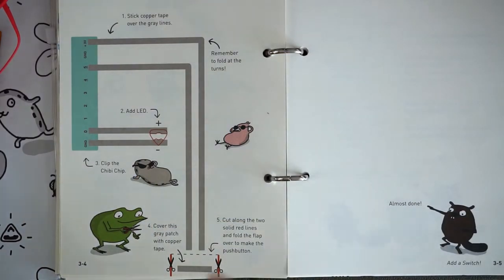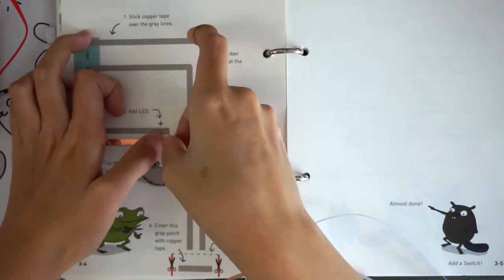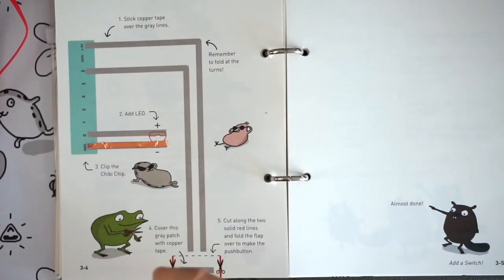Now open your Chibi book to page 3-4 to the exercise called Push Button Switch Template. First, lay down copper tape over the grey lines.